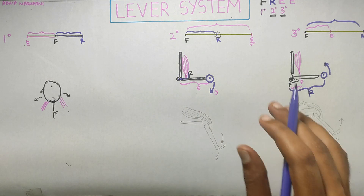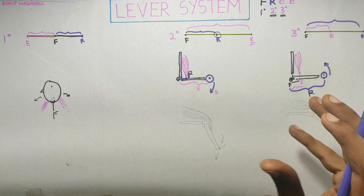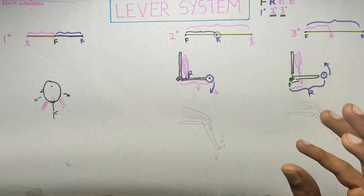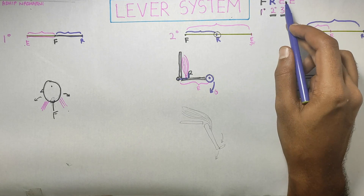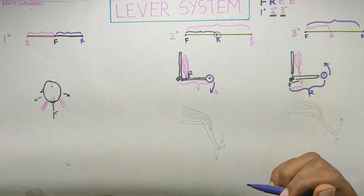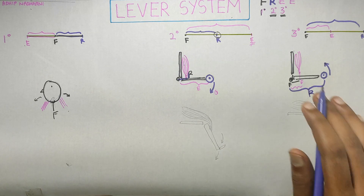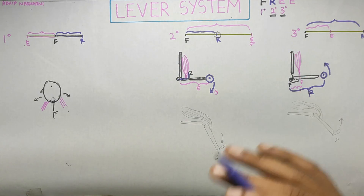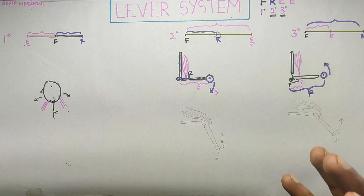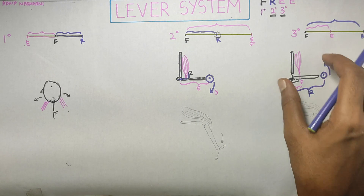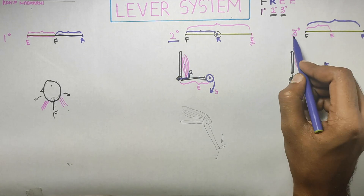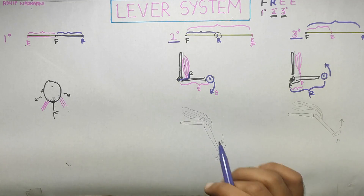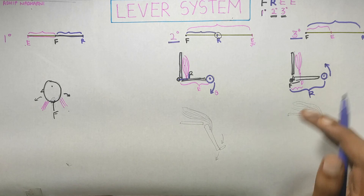If you are still finding it hard to understand what the resistance arm and effort arm are, check out my previous video where I've properly explained them. This video focuses on how the same joint acts like a second degree and third degree lever system — same joint, same muscle, but different movement. Now let's take another example with the quadriceps muscle.